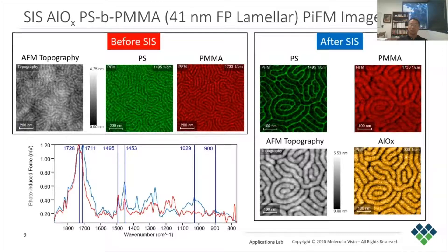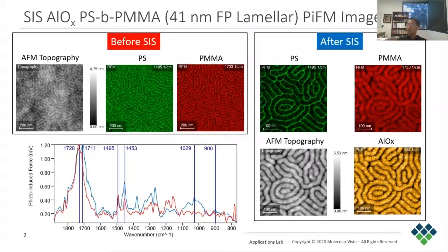In the right pane are PIFM images for PS, PMMA, and aluminum oxide at their respective wavenumbers, along with the AFM topography. We can see that the PMMA block has swollen due to infiltration by aluminum oxide. The PIFM images for PMMA and aluminum oxide are well correlated, confirming selective infiltration into the PMMA blocks.